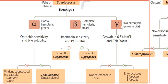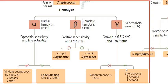In the gamma group, which causes no hemolysis of the blood, we check growth in 6.5% NaCl and PYR status. Positive is the Enterococcus group — that is, faecium and faecalis — while negative is the non-Enterococcus group, that is, bovis.